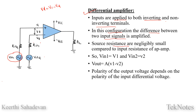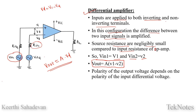Here we have the source resistance, RN1 and RN2, which are negligibly small compared to the input resistance of the op-amp. So we will consider that V1 and V2 are applied directly. Therefore, Vd is equal to V1 minus V2, and Vout is equal to A times (V1 minus V2), which is A times Vd.